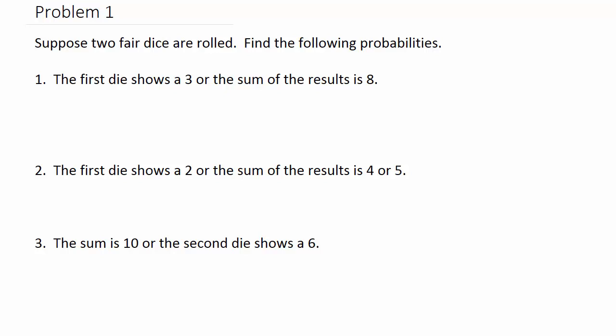Here we're going to look at probability, specifically when we have two events and we want the probability of the first event OR the second event. Suppose two fair dice are rolled — find the following probabilities.